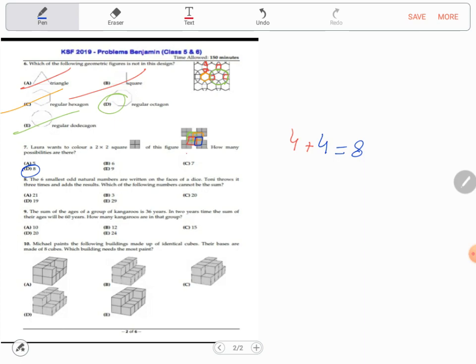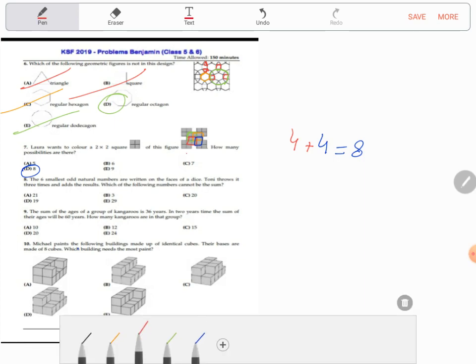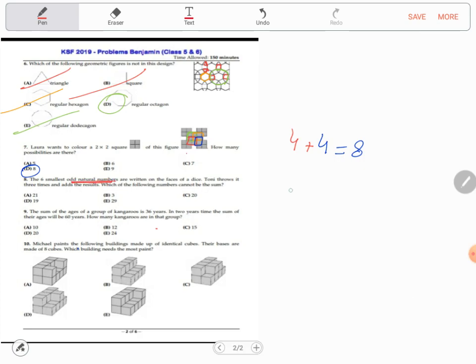Eight. Now question number eight: the six smallest odd natural numbers are written on the faces of a die. Tony throws it three times and adds the results. Which of the following numbers cannot be the sum? Now let's look at what's the smallest natural number. Natural number starts with one. So if you were to write down all the six natural numbers, the smallest ones, they would be 1, 3, 5, 7, 9, 11. These are the smallest six natural numbers.